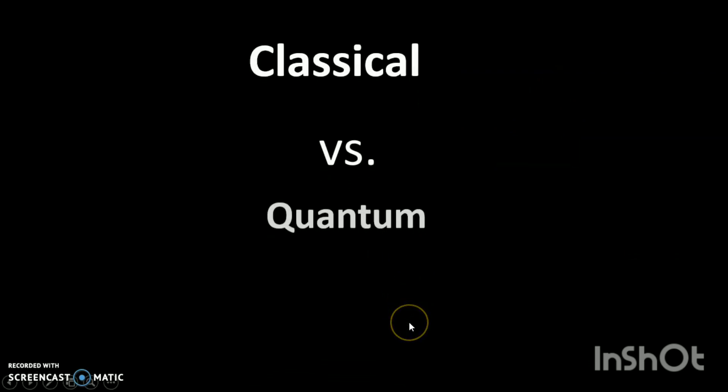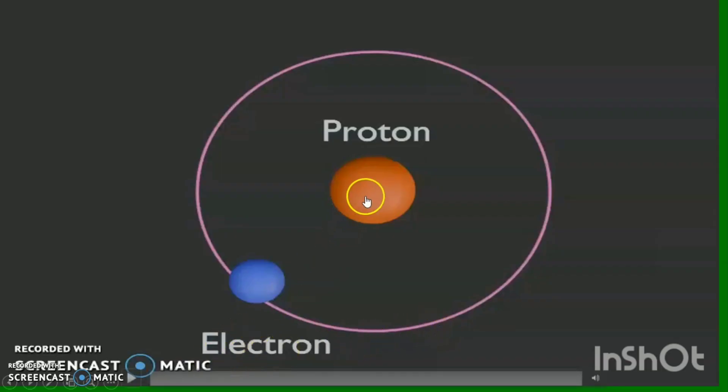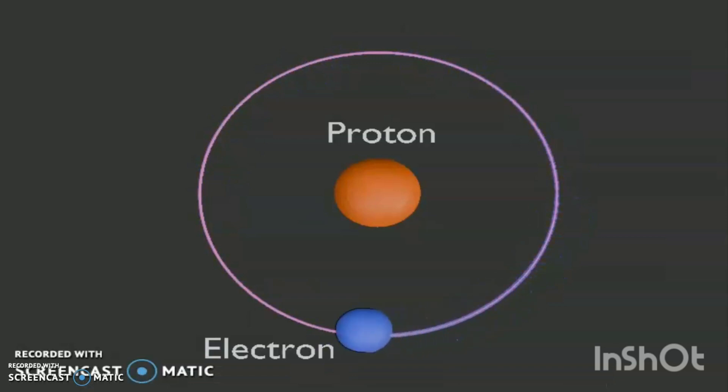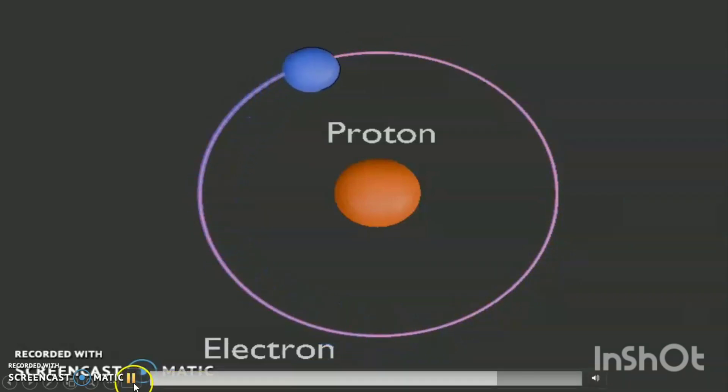Classical versus quantum. In particular, let's focus on a hydrogen atom consisting of an electron in motion around a proton. Let's see what we expect to happen within the classical physics framework. As the electron orbits and falls towards the proton, it will release energy in the form of light.